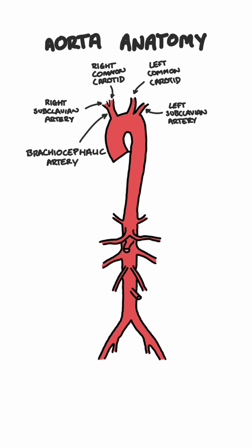The aorta now descends through the thorax, piercing through the diaphragm at the level of T12.